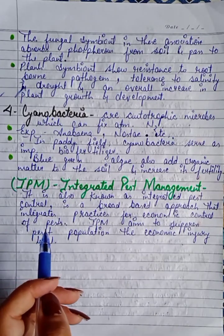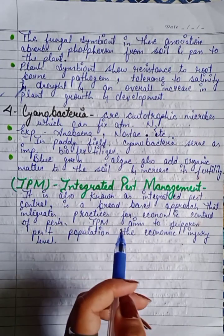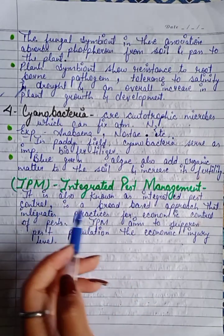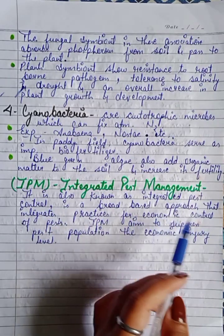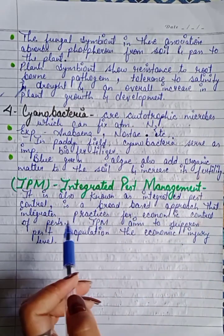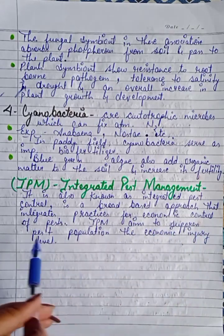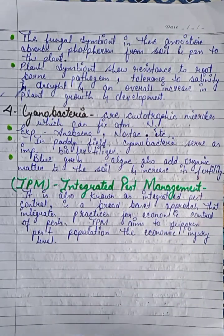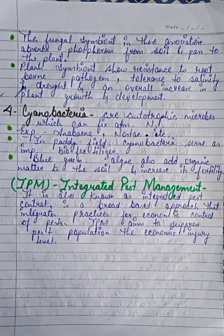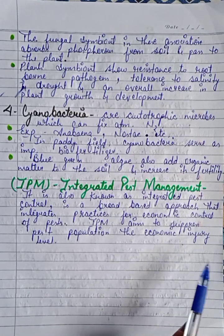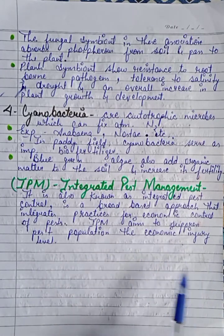Last is IPM — Integrated Pest Management, also known as Integrated Pest Control. It is a broad-based approach that integrates practices for the economic control of pests. IPM uses biological methods to control pests and aims to suppress pest populations at the economic injury level.